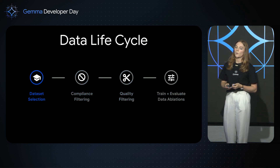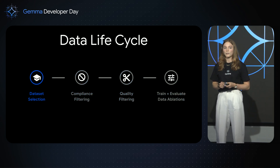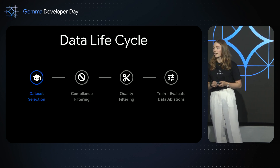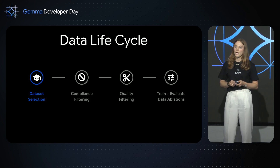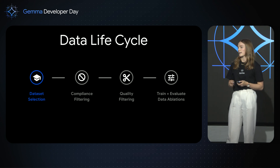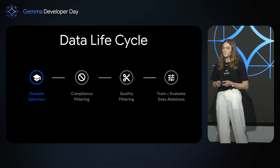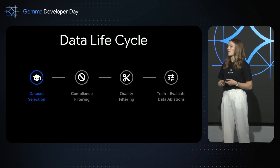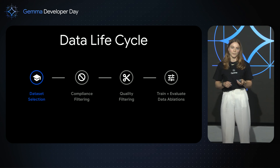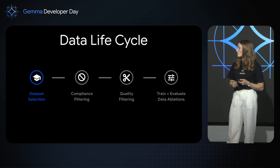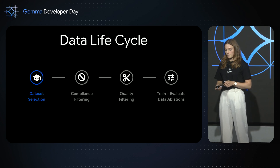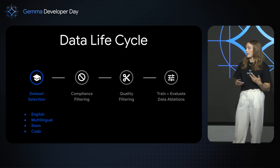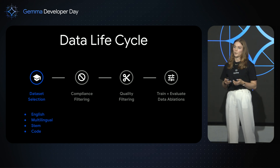Starting with data selection: Gemma is a text-only model predominantly trained on web-based data. We train on both English and multilingual content, as well as specific math and STEM content and code. When we select new datasets, we want to make sure we're covering new domains and introducing new content and information to our models. In summary, we predominantly have English, multilingual, STEM, and code information.